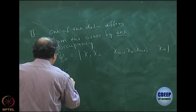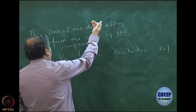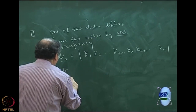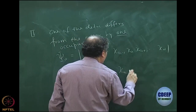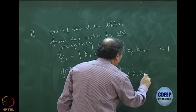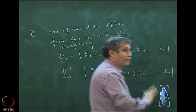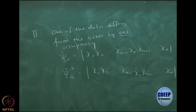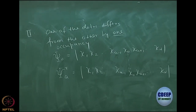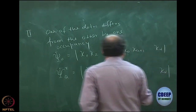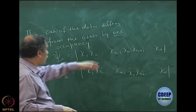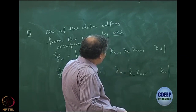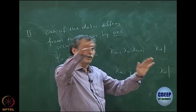This is one determinant which I call the reference determinant. With respect to this, the other determinant differs by one occupancy, which I called ψₐʳ: χ₁, χ₂, everything is the same including χₐ₋₁, but χₐ is replaced by χᵣ. So in exactly that column where χₐ is, I am replacing it by χᵣ. I could also put χᵣ in another column and interchange, introducing a negative sign, but that is a moot point.